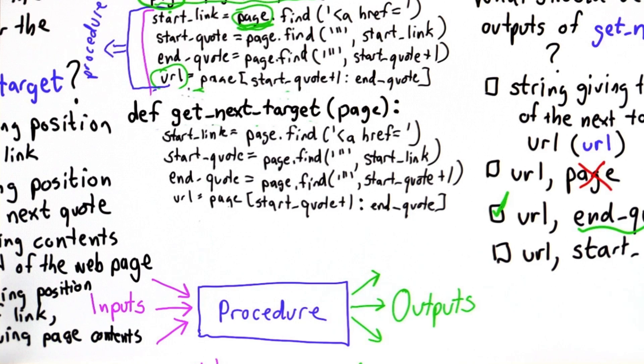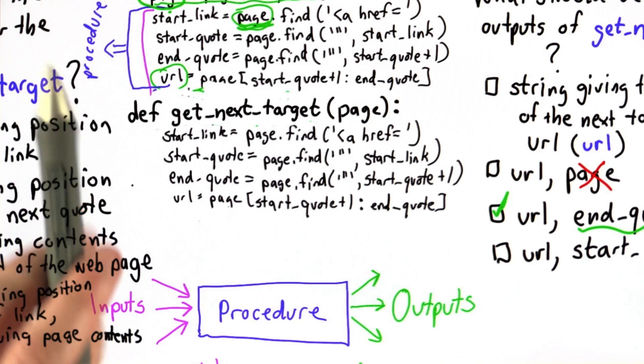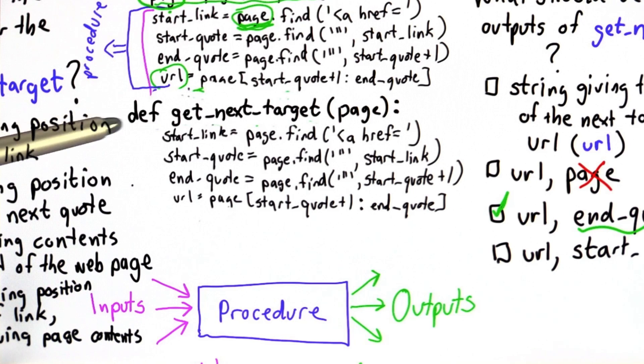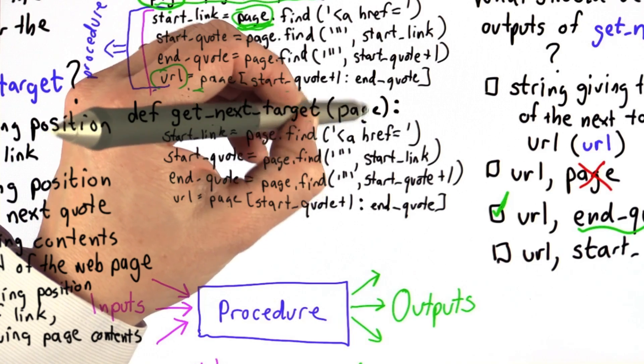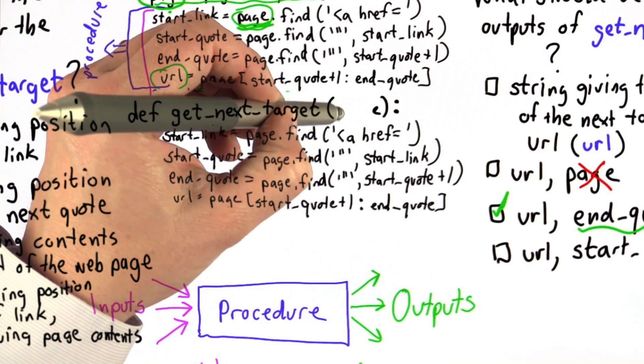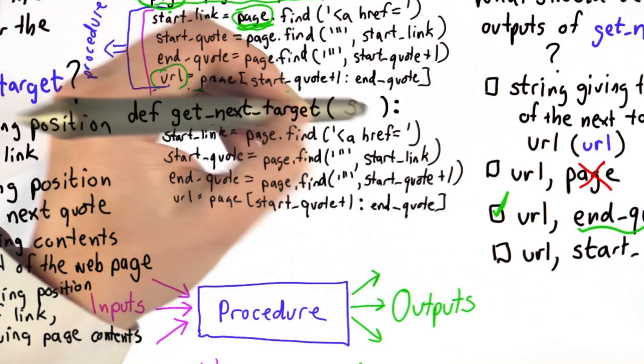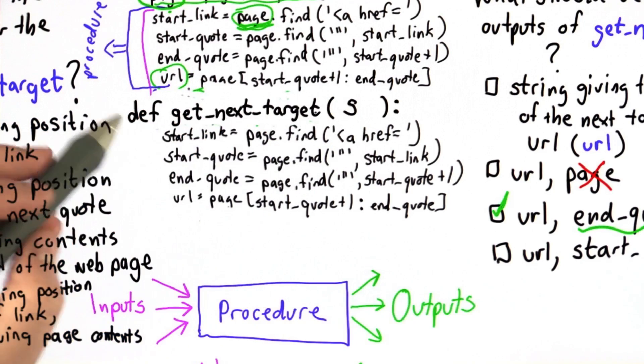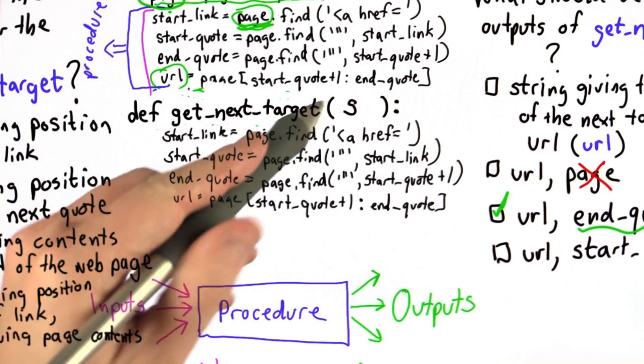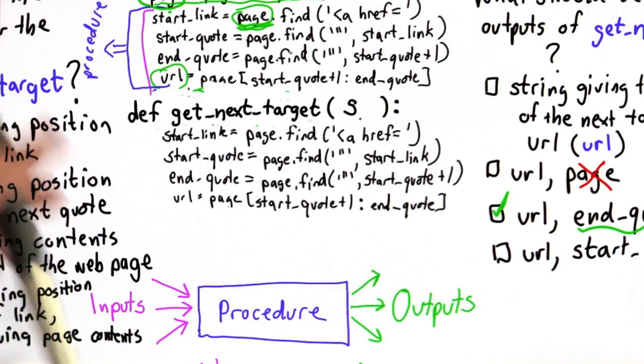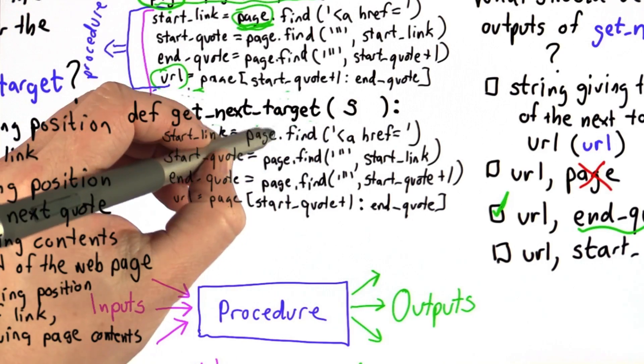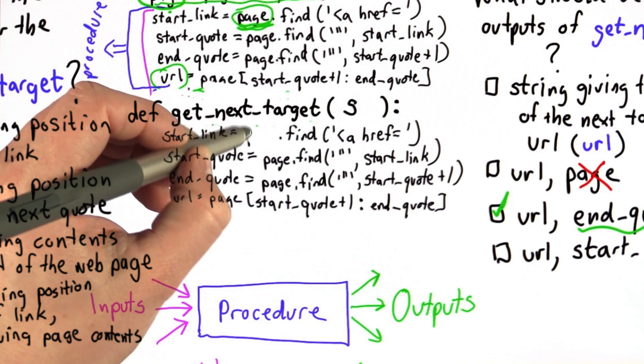And we can change the name of page. It sort of makes sense to change that name. This code works no matter what we pass in. It doesn't have to be a web page. Any string that we pass in, this code will find it. So it makes more sense to give it a slightly more generic name. We'll change the name to s. If we change the name of the parameter, well, everywhere that we use page, now we don't have the value of page. What we have is the value of s, which is the name of the parameter. So we'll change all of those to s's as well.